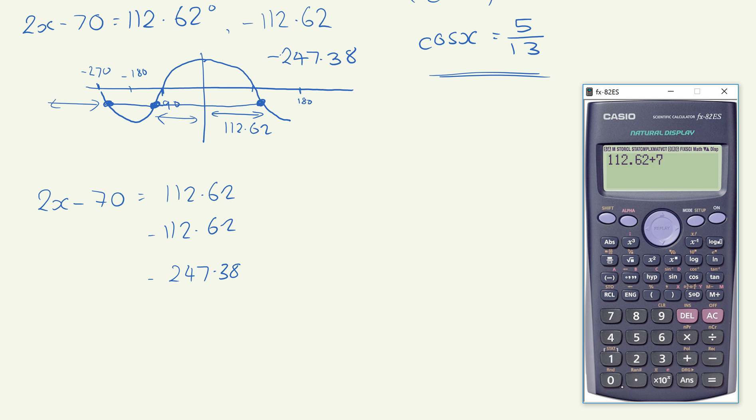So adding the 70 and then dividing by 2. So our first, this one here, our x value is 91.31 degrees. The next one, minus 112.62 and again plus the 70 and divide by the 2. So that one, x is equal to minus 21.31 degrees. And then our final solution, minus 247.38 and again plus the 70 and divide by the 2. So that one gives us x is minus 88.69 degrees.